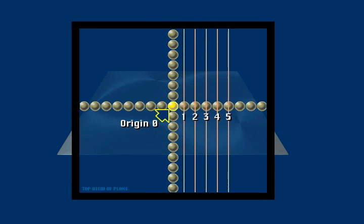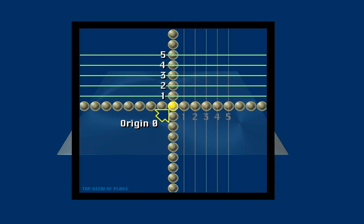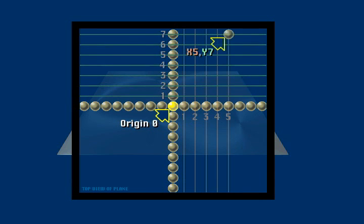By counting five points to the right of the origin, for example, then seven points up, we reach a point which could be labeled x5, y7. These letter and number pairs which identify the specific point are called coordinates.